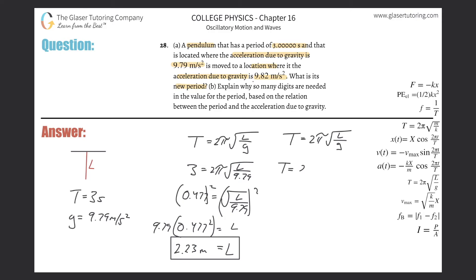So the new period now is going to simply be 2π multiplied by the square root of that length. So I'm probably going to use the exact length in my calculations, but I'm just going to plug in the 2.23 for now, divided by the g of 9.82. So let's find the new period now. So it's going to be 2π times then the square root of that exact value, 2.23, divided by 9.82.